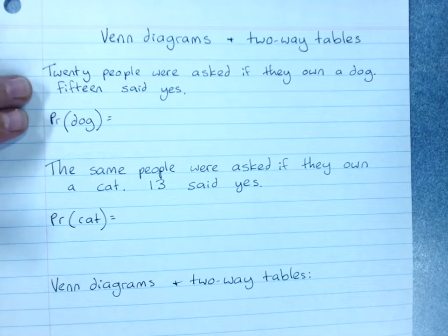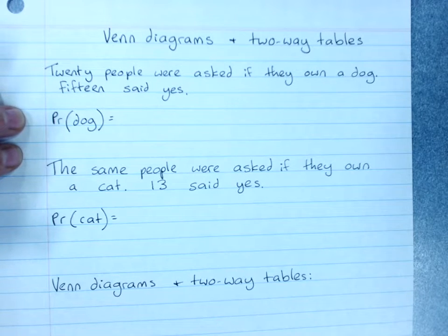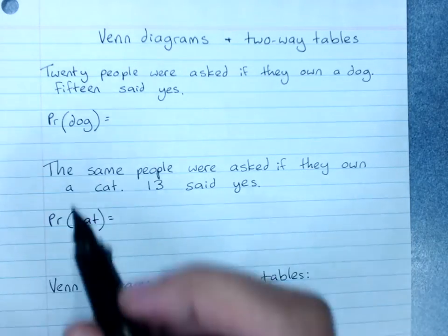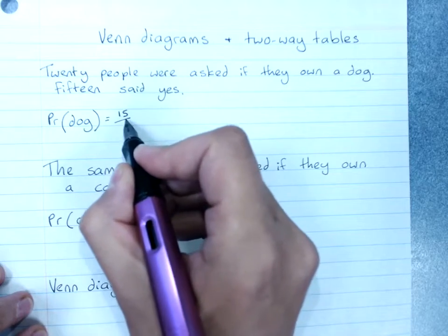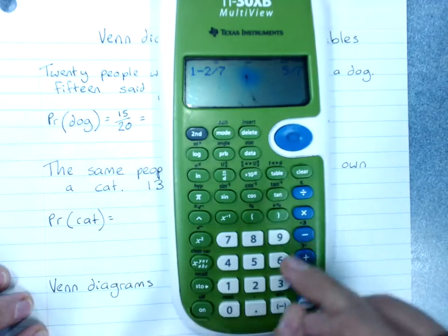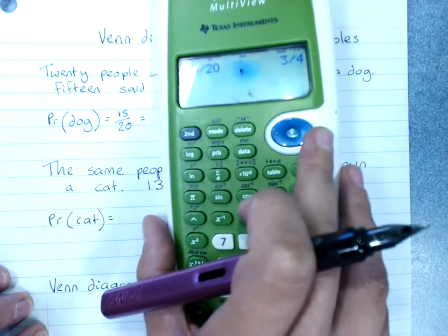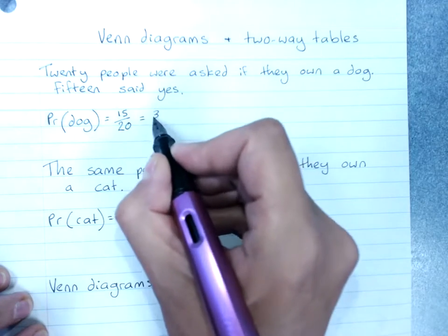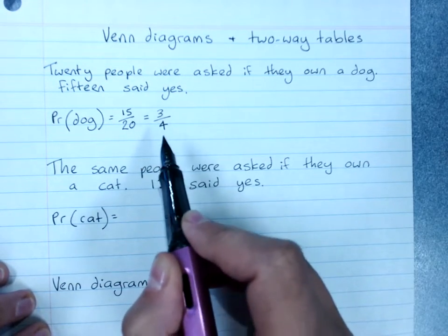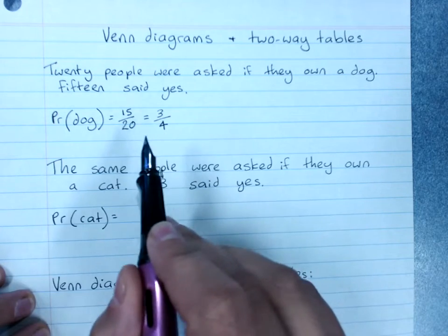So imagine twenty people were asked if they own a dog and fifteen of them said yes. That's nice and easy. What's the probability that a randomly chosen person would own a dog? That would be 15 out of 20, and that would simplify with our calculator to 15 out of 20 down to 3 over 4. That says three quarters of the people owned a dog, but it also says when I choose someone at random that the chance that they have a dog is three quarters.